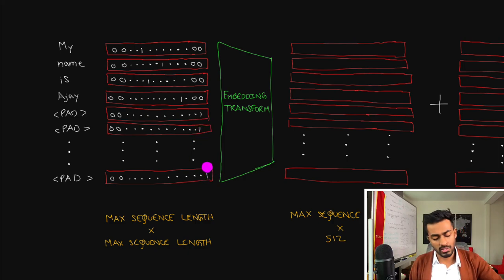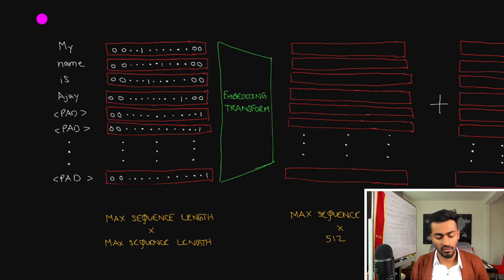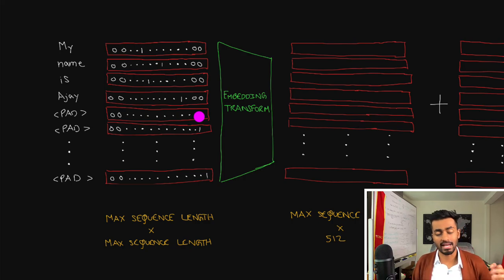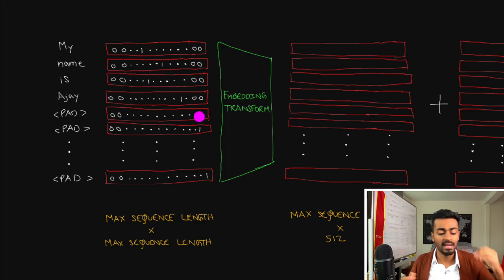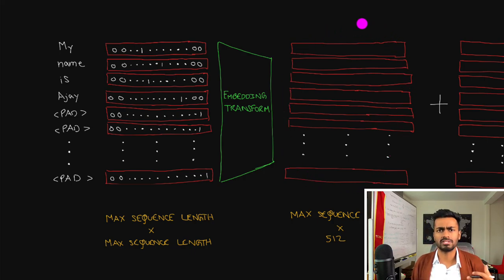This one-hot matrix will be of shape max_sequence_length × max_sequence_length, which is the maximum number of words we pass through the architecture. These one-hot vectors don't encapsulate words in a compressed space, so in order to have more condensed vectors that incorporate better meaning and allow us to compute distances between them, we want to transform them into actual embedding vectors.